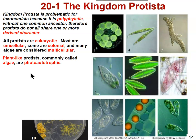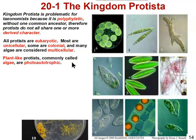There are three groups of protists, and it's very important to understand that they are not classification groups. The plant-like protists are commonly referred to as algae, which are photoautotrophic — they're the photosynthetic protists. They have chlorophyll and are able to capture the sun's energy and use carbon dioxide and water to make sugar. They can be single-celled, colonial, or multicellular.